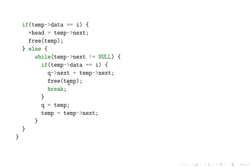...and you have the previous pointer's next node pointing to it, and you take that pointer and move it to the next of the node which we want to delete — that is temp — and then you break out of this loop. So that's it.